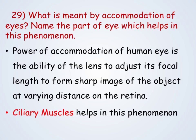What is meant by accommodation of the eyes? Name the part of the eye which helps in this phenomenon. The power of accommodation of the human eye is the ability of the lens to adjust its focal length to form a sharp image of the object on the retina at varying distances. Ciliary muscles help in this phenomenon.